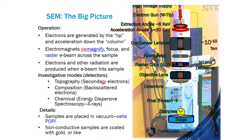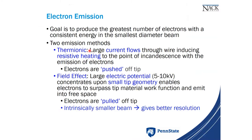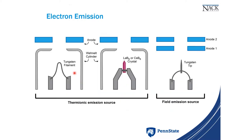First, we need to produce an electron beam to investigate the sample. All the E's represent electrons, and everything comes from the top. We start with an electron gun — an electron source, just like a light source for an optical microscope. To get an electron beam, we need something rich with electrons: metals. There are two main ways to release electrons from metals: thermionic emission, using heat, and field emission, using an applied electric field.